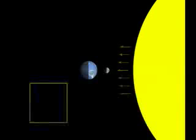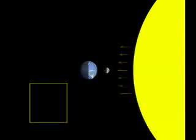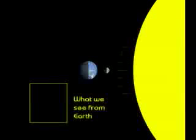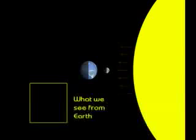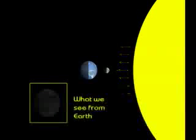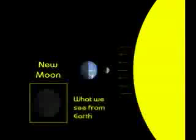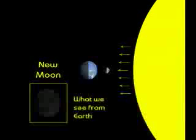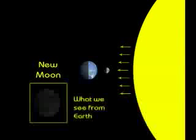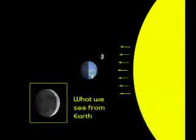Look in the yellow square. This is what the Moon looks like from planet Earth. Here is the first phase. It's called the New Moon. We can't see it very well because we are looking at the dark side of the Moon.